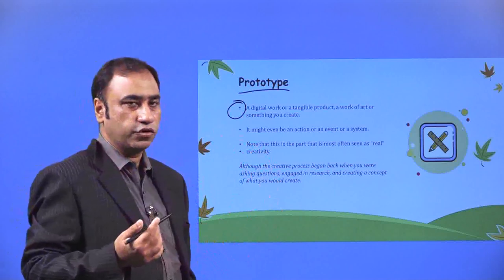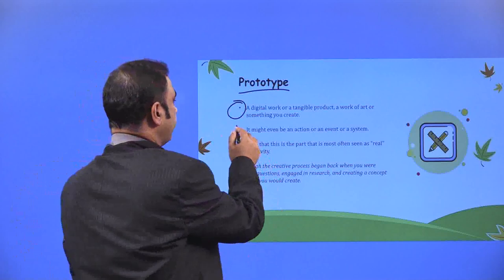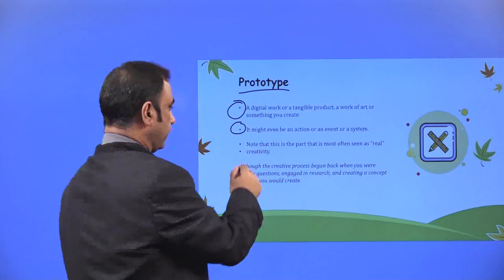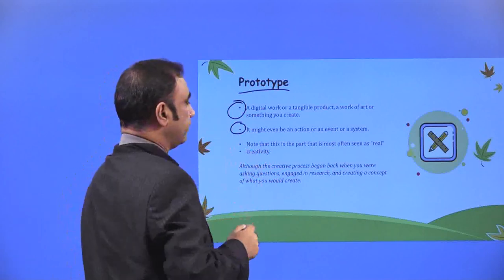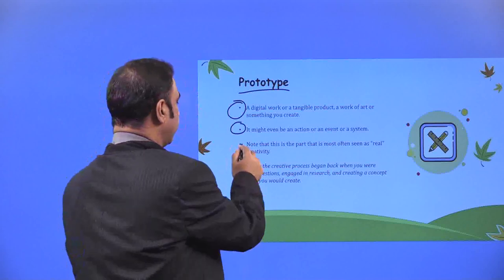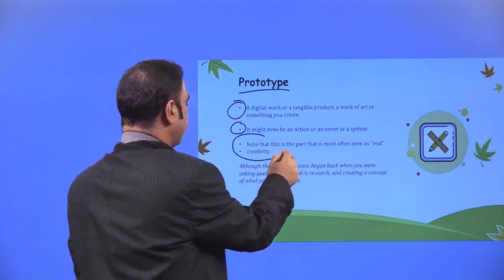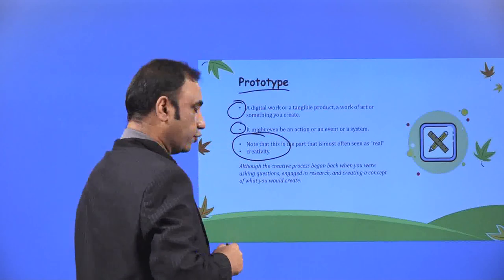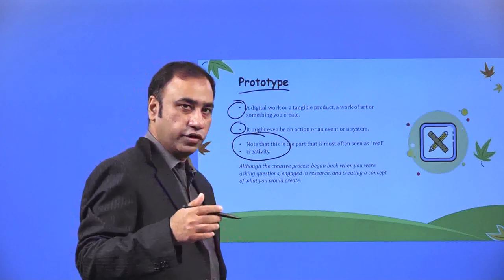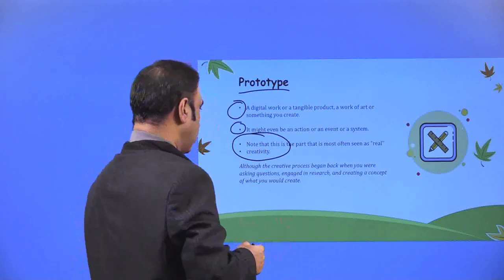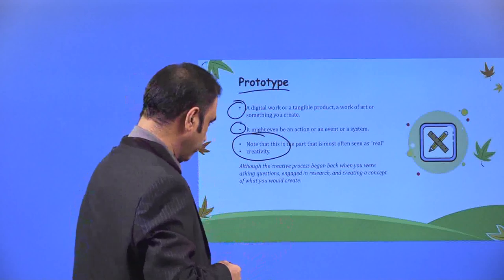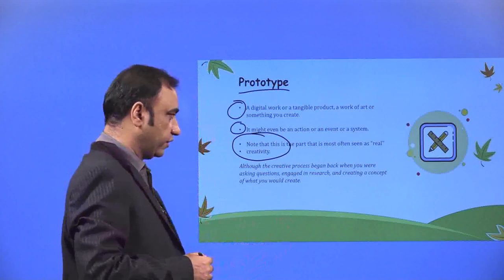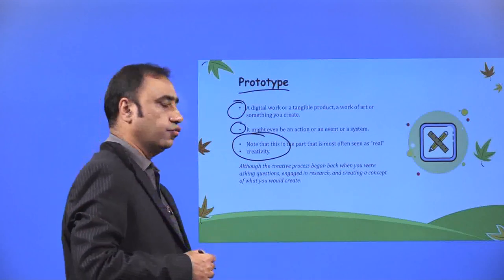What are the different types of prototype? We will see. It might be even an action, an event, or a system. Note that this is the part most often seen as the real creativity, because you create the real product here in the form of prototype and then you transform the prototype to a real product, although the creative process began back when you were asking questions, engaged in research and creating a concept.